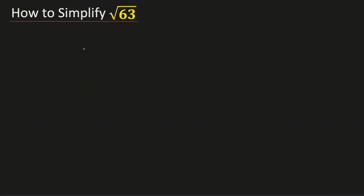To simplify square root of 63 in its simplified radical form, we will first write 63 as 9 times 7. We have written it this way because 9 is a perfect square, which is the square of 3.